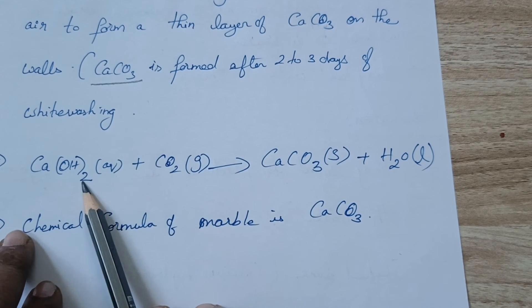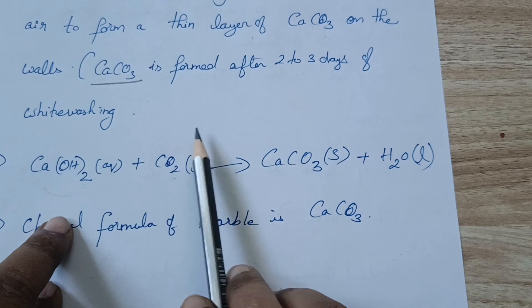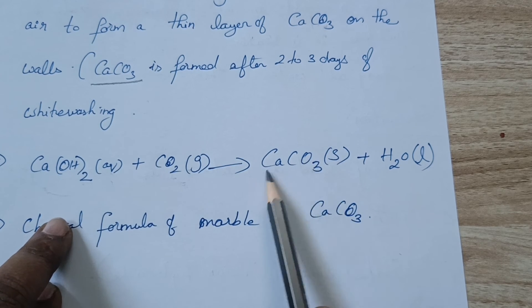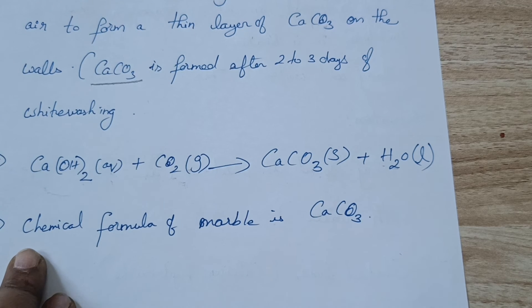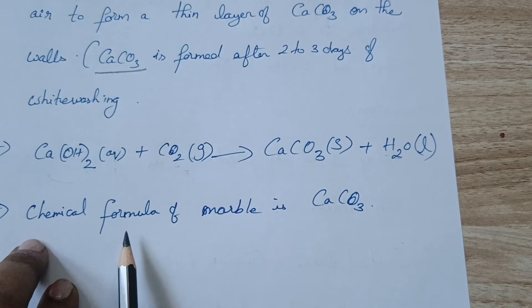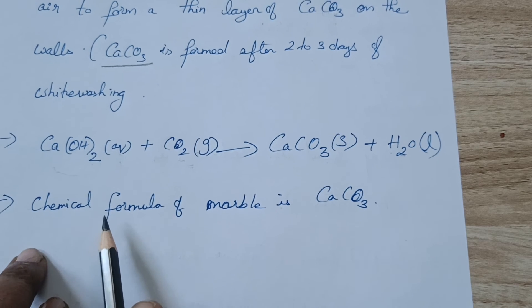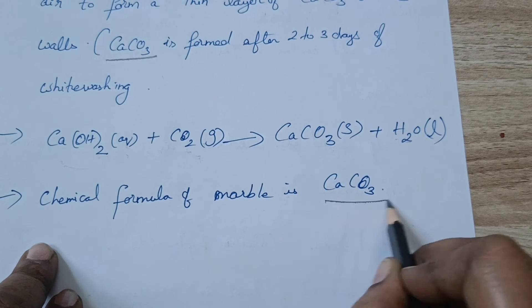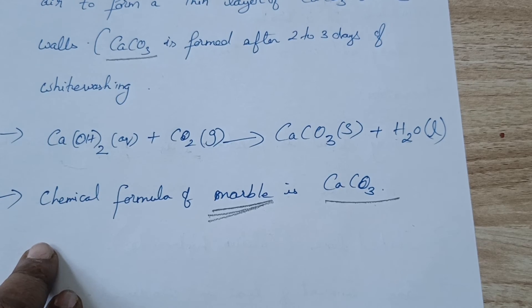Calcium hydroxide (aqueous, because it is mixed in water) plus carbon dioxide gas present in the air — both react to form calcium carbonate plus water. Interesting fact: the chemical formula of marble is also calcium carbonate, CaCO3. Keep that in mind.